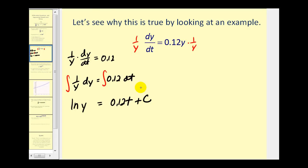This is a logarithmic equation. If we wanted to rewrite this as an exponential equation, we would have e raised to this power would have to equal y. E raised to the power of 0.12t plus c must equal y.